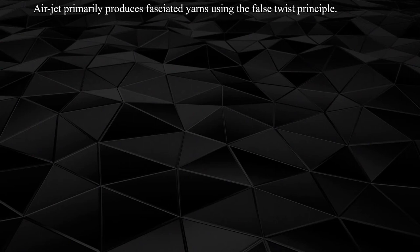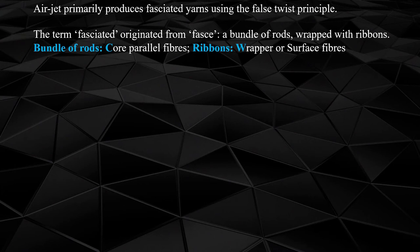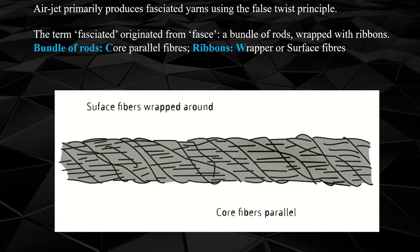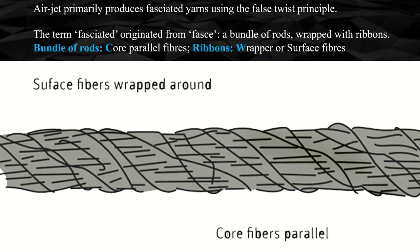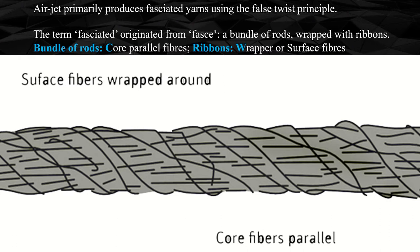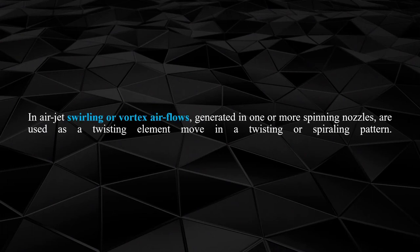Air jet primarily produces fasciated yarn using the false twist principle. The term fasciated originated from the word fasces, which means a bundle of rods wrapped with ribbons. Here, bundle of rods means core parallel fibers, and ribbons mean wrapper or surface fibers. If you look at the structure, surface fibers are wrapped over the core, which contains parallel fibers.